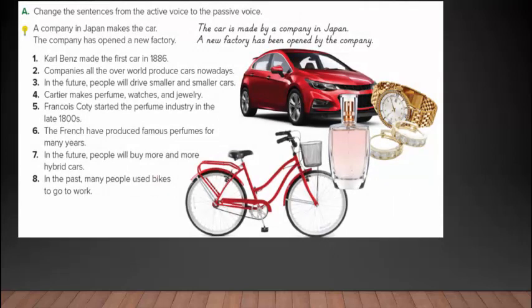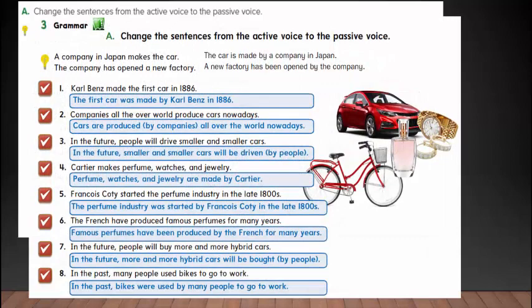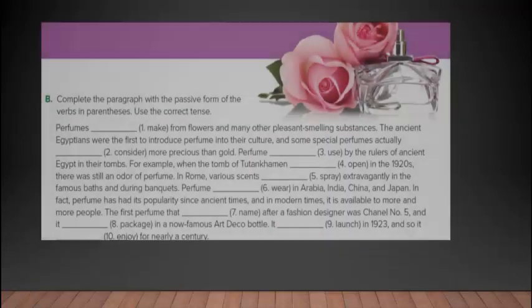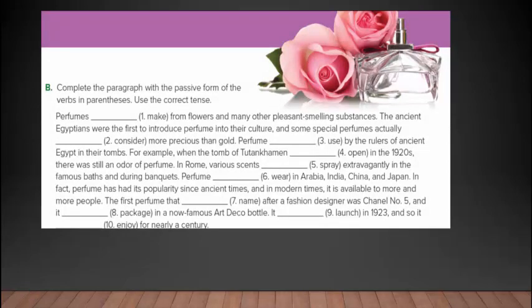Now we will check these questions and change the sentences from the active voice to the passive voice — بتحويل هذه الجمل من صيغة المبني للمعلوم إلى صيغة المبني للمجهول. Now we will see the answers. Complete the paragraph with the correct form of the verbs in parentheses using the correct tense — أكمل الفراغات في المقطع التالي باستخدام المبني للمجهول.